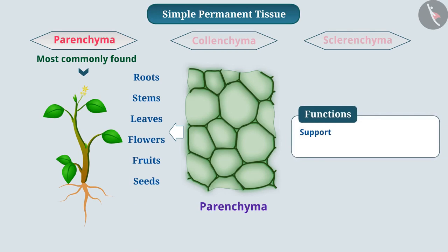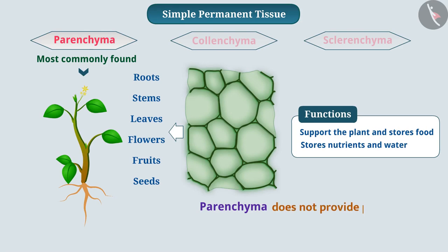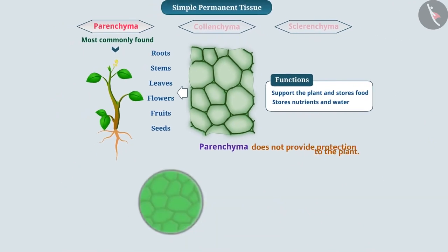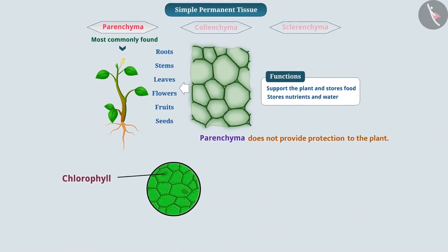It serves to support the plant and stores food. Parenchyma present in stem and roots also stores nutrients and water; therefore, these cells have a large vacuole. Parenchyma does not provide protection to the plant. Some parenchymatous tissues have cells that contain chlorophyll. Such parenchyma tissue is called chlorenchyma, and these tissues perform photosynthesis.